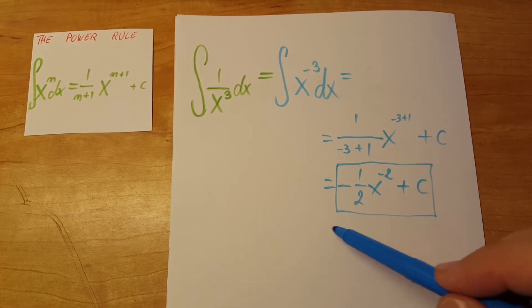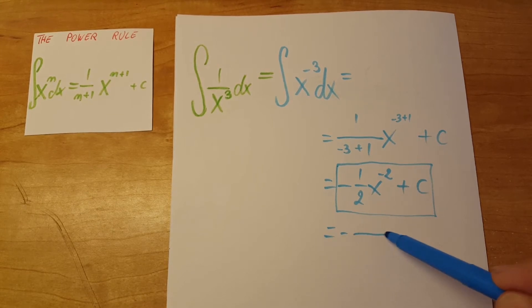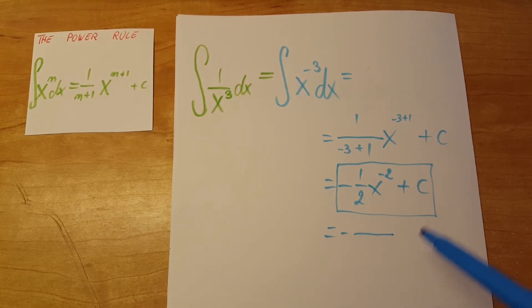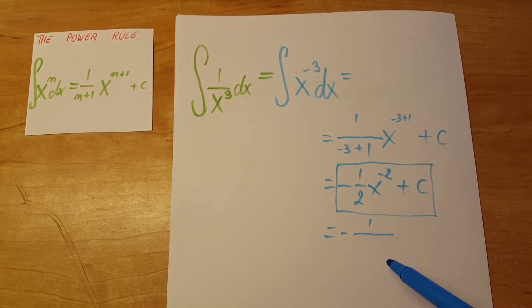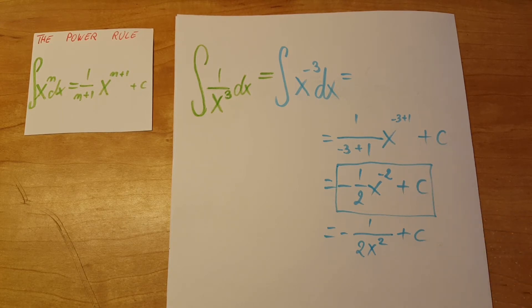Let's do that. Minus, this will turn into a fraction, it'll be one over two x square, plus c. There you go, whichever answer you like better.